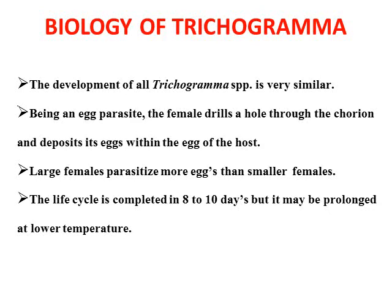Being an egg parasite, the female drills by making a hole through its sharp-pointed ovipositor to the chorion — the chorion is the outer egg cover — and deposits its egg within the egg of the host. Larger females parasitize more eggs than smaller females as they have the capacity to lay more eggs. The life cycle is completed within 8 to 10 days but may prolong at lower temperatures. During low temperatures the life cycle may extend to 12 or 15 days.